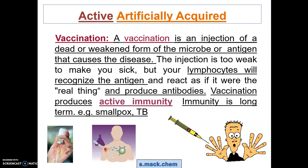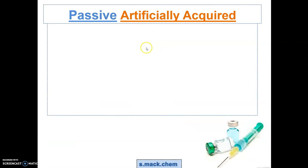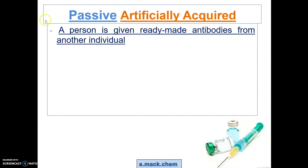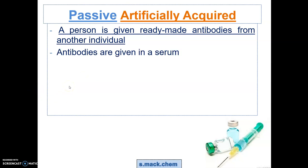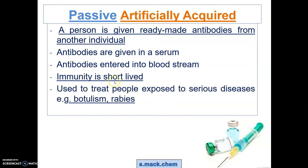Now, passive artificial immunity means that antibodies are introduced into your bloodstream. These antibodies can be sourced from another person, another individual, or even an animal, where antibodies are given in the form of a serum into the body. It is considered artificial as the antibodies are not made by your own immune system, and it is passive because the immunity is short-lived.